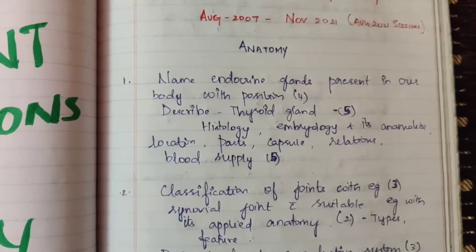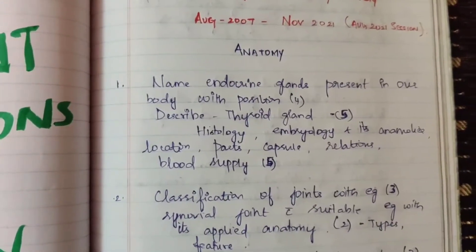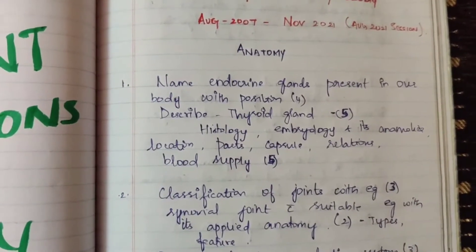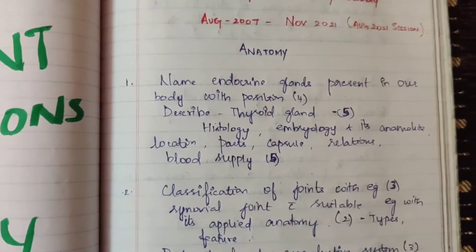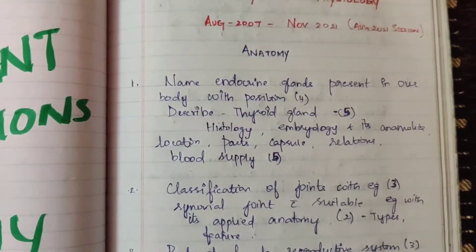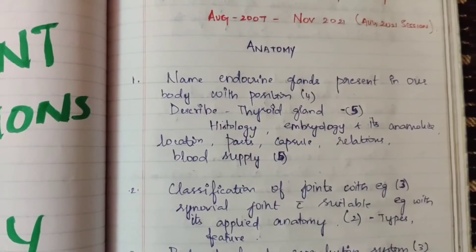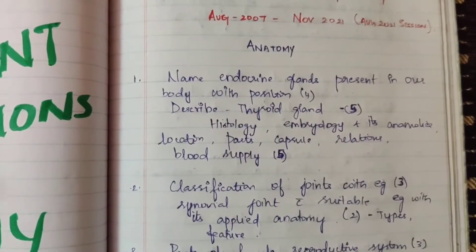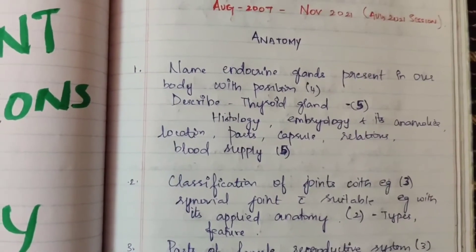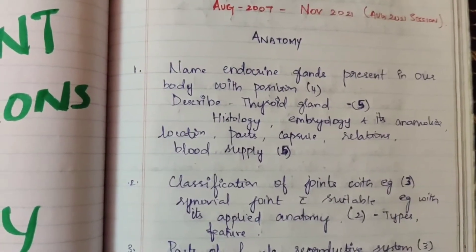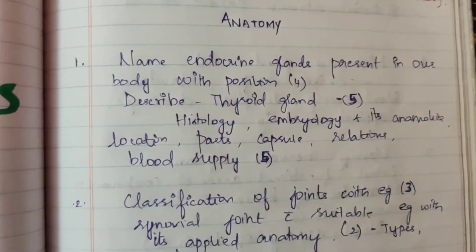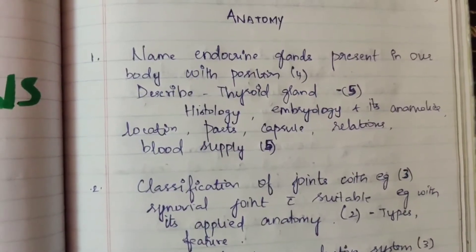First, 15 marks are mentioned. First 15-mark question: name endocrine glands present in our body with position, and describe about thyroid gland. This question appeared 4 times. Thyroid gland is an important question asked 5 times, covering histology, embryology, anomalies, location, capsule relations, and blood supply.